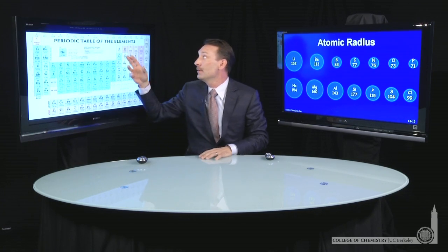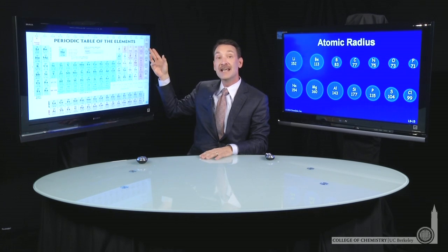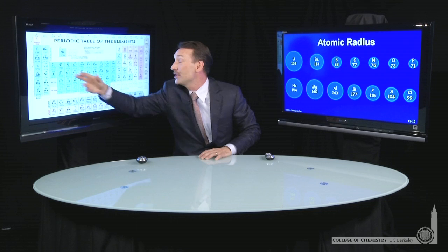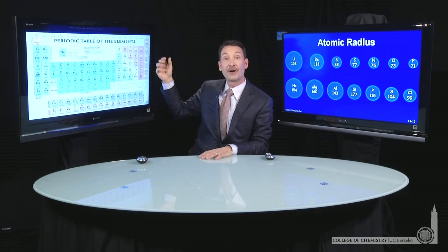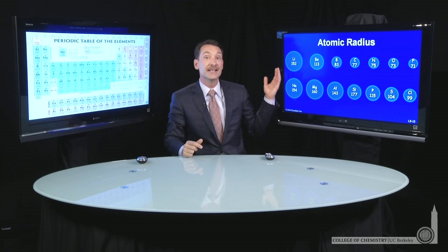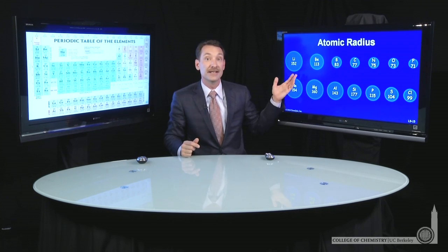Lithium, beryllium, boron, carbon, nitrogen, oxygen, fluorine, neon is across one row of the periodic table. And then I've gone from sodium to argon across the next row of the periodic table. And what you see is a decrease in the atomic radius.